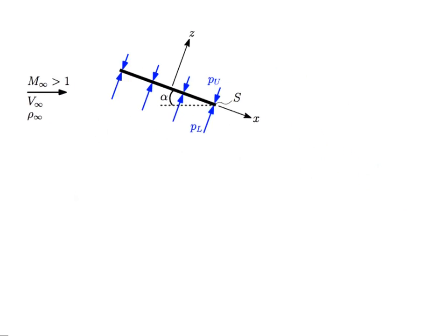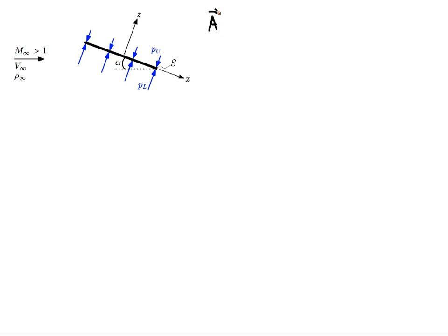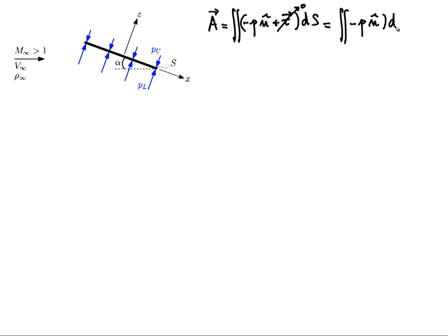So how do we start? We're going to write the expression for a dynamic force — the pressure term and the viscous stresses term. Now in this case we're going to assume that the fluid is inviscid, so we're going to cross out the tau and simply write the integral of the pressure. If we split into the upper and the lower surface, we have PL and L, normal on the lower surface, and then the upper surface.